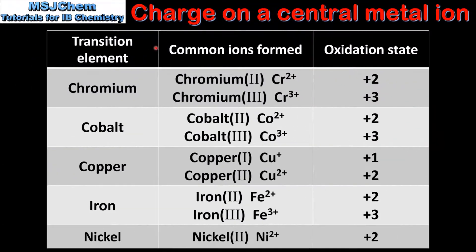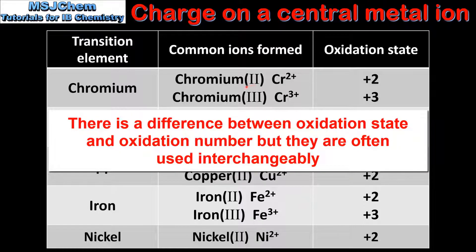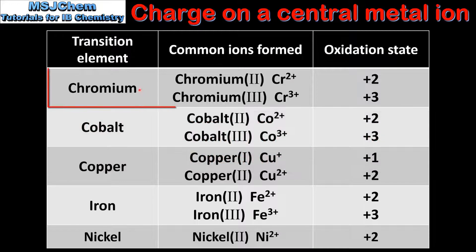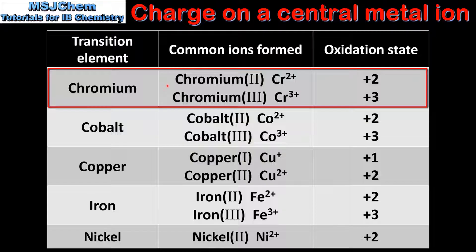Next we look at some common ions formed by transition elements together with their oxidation states. It's worth noting that the Roman numerals after the name of the ion refer to the oxidation number of the ion. In this video I'll be referring to the oxidation state, which can also be the oxidation number. Starting with chromium, which can form the chromium 2 ion with a 2+ charge and the chromium 3 ion with a 3+ charge.